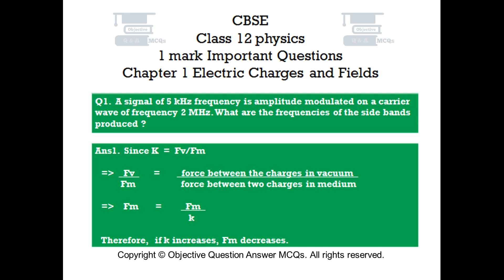Answer number 1. Since k is equal to Fv by Fm, where Fv by Fm is equal to the force between the charges in vacuum divided by the force between two charges in a medium. So, Fm is equal to Fv by k. Therefore, if k increases, Fm decreases.